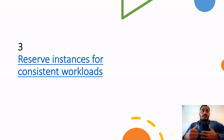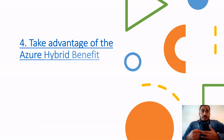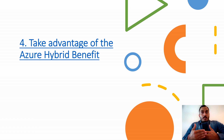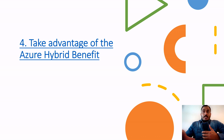Fourth is to take advantage of the Azure Hybrid Benefit. AWS is five times more expensive than Azure for Windows Server and SQL Server. You can save big when you migrate your on-premises workloads to Azure, because if you already have these resources on-premises, you already have the licenses. You can reuse the same licenses in Azure for Windows Server and SQL Server and save a big deal.